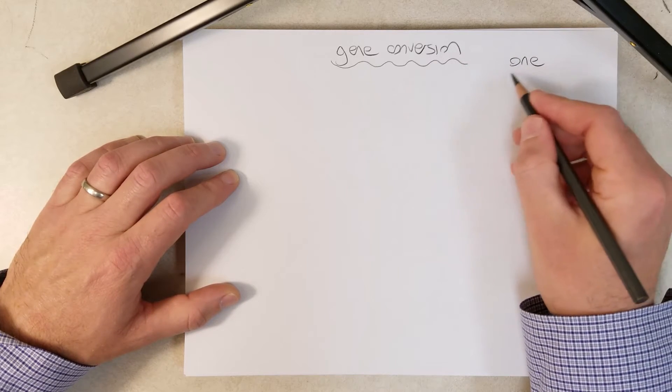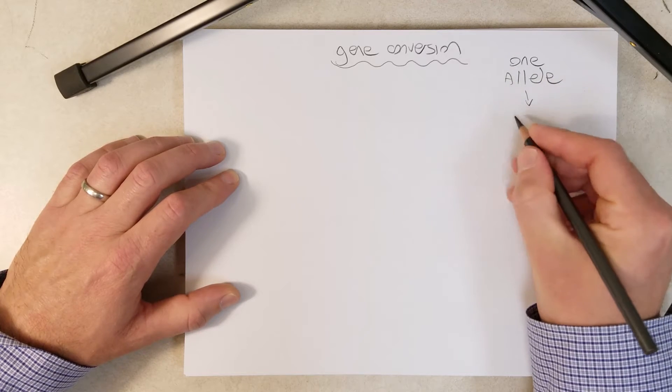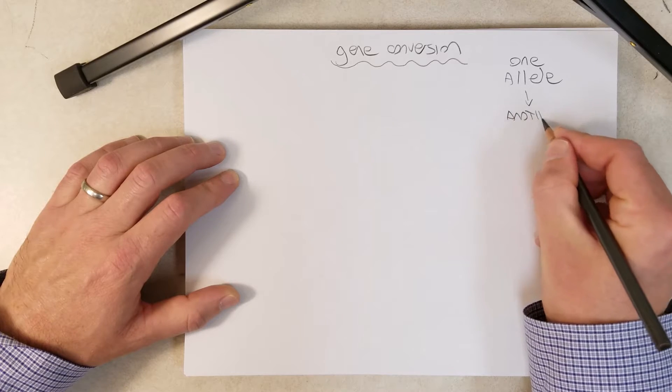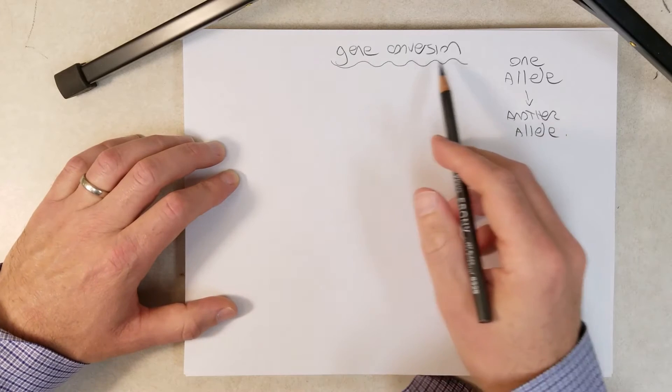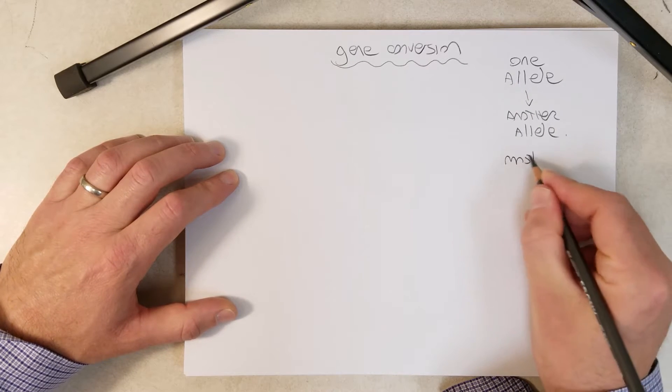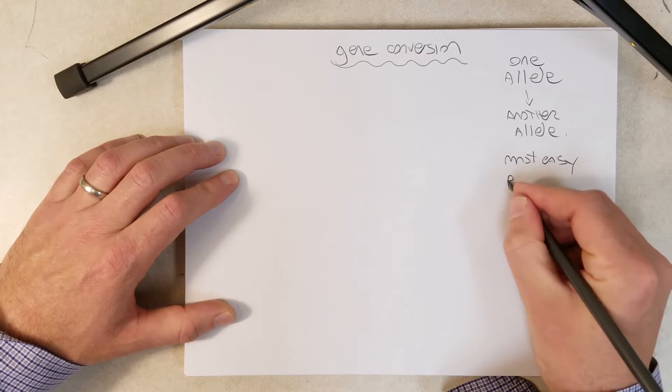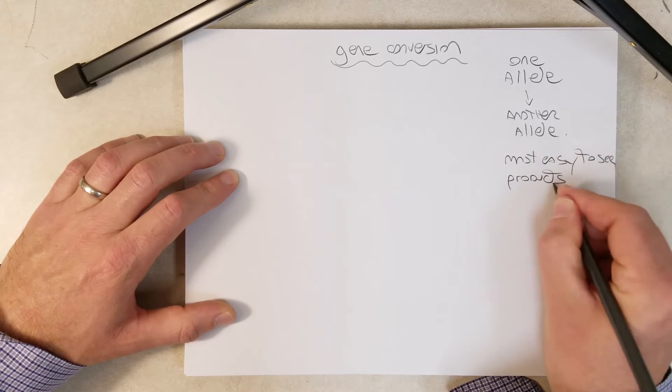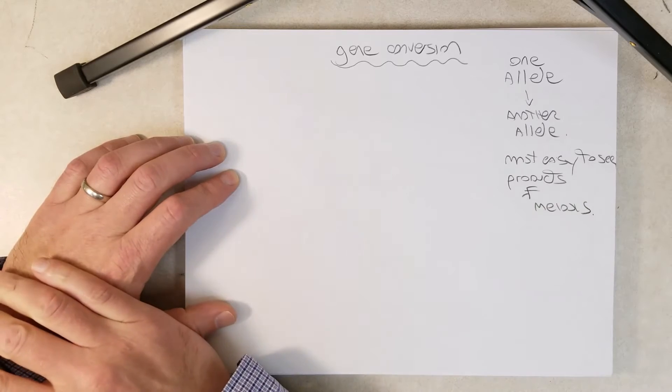So essentially, gene conversion is when an allele, let's just take one allele, when one allele is converted to another allele. And it's most easy to see in products of meiosis.